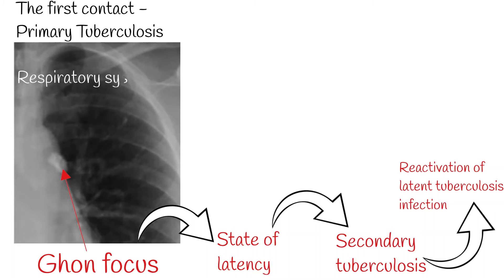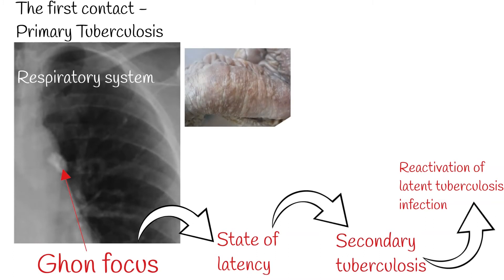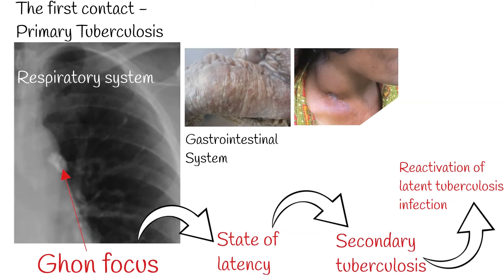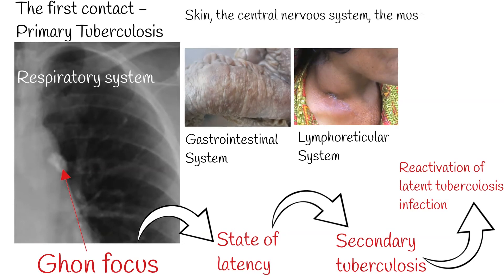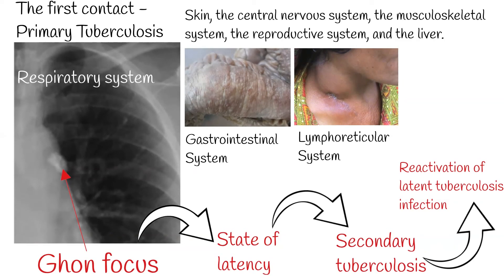Tuberculosis mainly affects the lungs, but can affect other organ systems, including the respiratory system, the gastrointestinal system, the lymphoreticular system, the skin, the central nervous system, the musculoskeletal system, the reproductive system, and the liver.